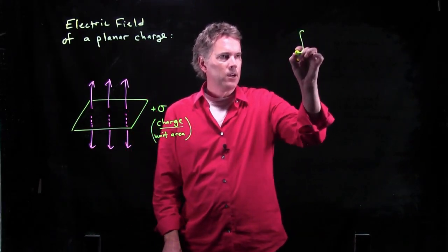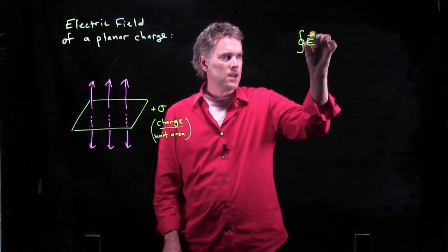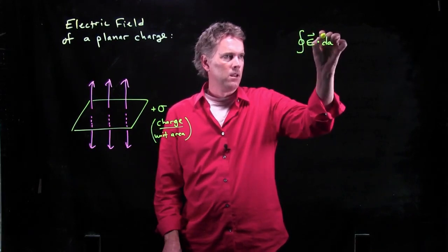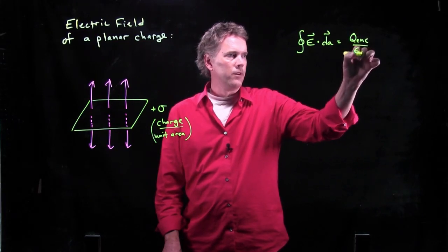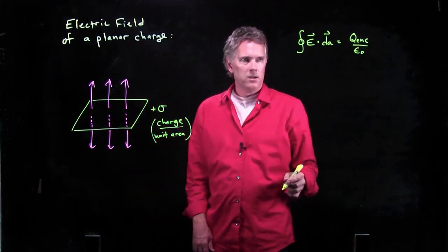So let's go back to Gauss's law. Gauss's law says integral E dot DA equals Q enclosed over epsilon naught.